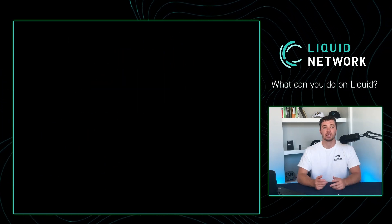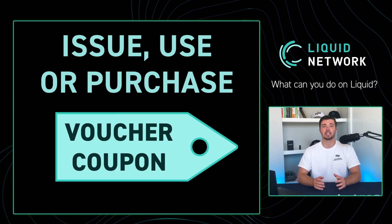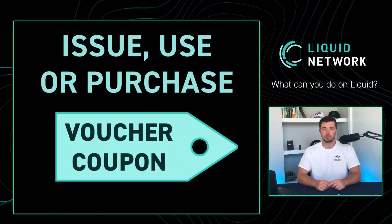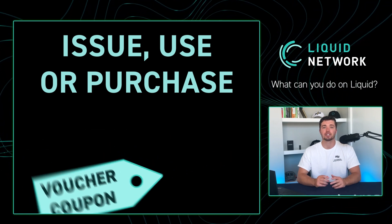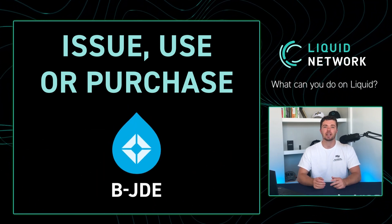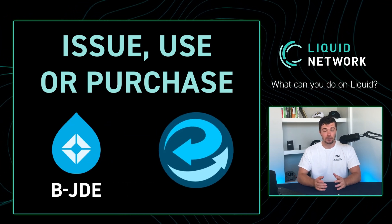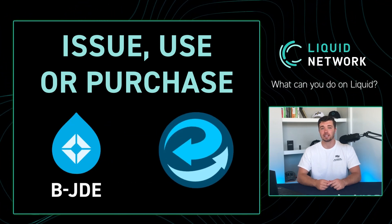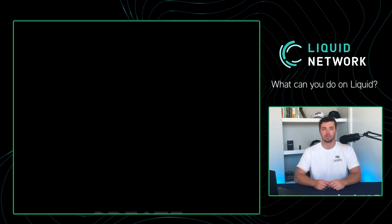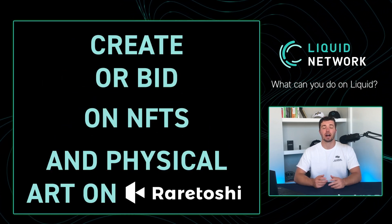Issue, purchase, or use voucher coupons to get special discounts. For example, users can get special discounts right now on several items listed on the Blockstream store by checking out the token market on SideSwap. This includes a 15% discount on the Jade hardware wallet.